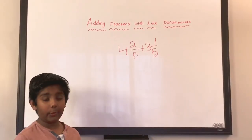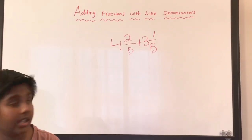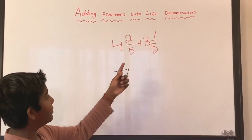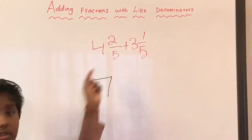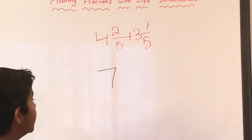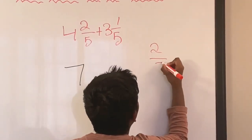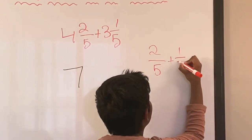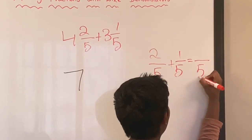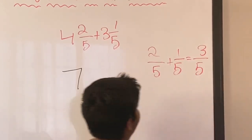Now we will add the wholes: four plus three equals seven. Now we have to add the two fractions. Two over five and one over five — the denominator is five, keep it as itself, two plus one equals three, so that's three over five.